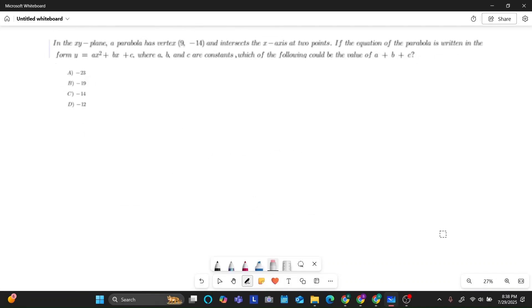Moving on to question number three. In the xy plane, a parabola has a vertex at 9 comma negative 14 and intersects the x-axis at two points. If the equation of the parabola is written in the form y equals ax squared plus bx plus c, where a, b, and c are constants, which of the following could be the value of a plus b plus c? So we don't know a lot of information in this question right here. We have to work with limited information to get to our conclusion. And that's why this question seems really complex for a lot of people. But it's just a lot of steps. It's not necessarily that these steps are super complex or really hard. But in order to work this question, we have to look at what's been provided. So we're told that the vertex is at 9 comma negative 14. We're also told that this parabola intersects the x-axis at two points. So let's visualize that real quick.